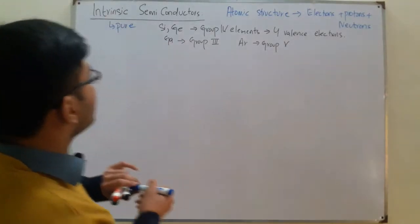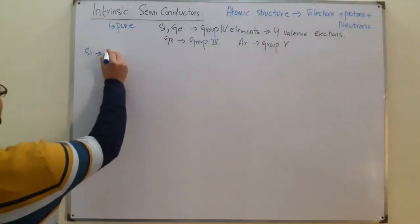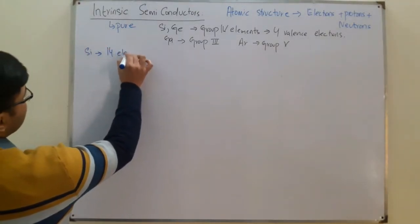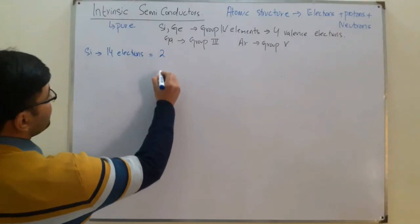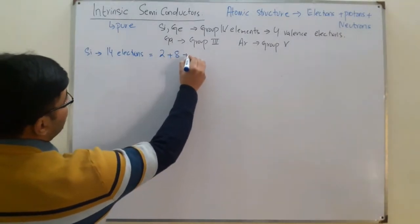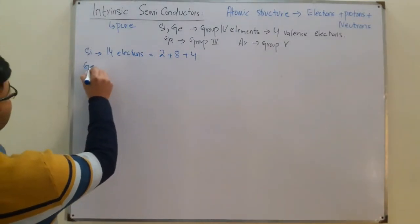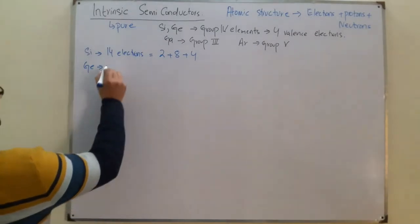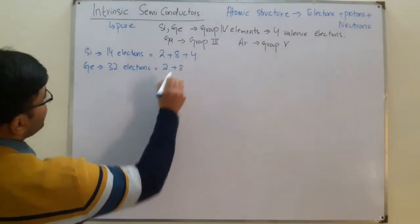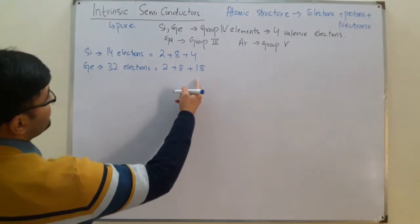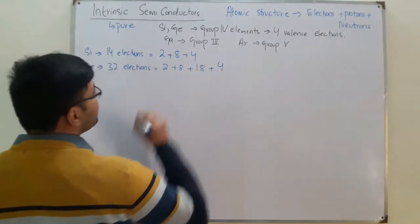Silicon has a total of 14 electrons: 2 in the first shell, 8 in the second shell, and 4 in the last shell. Similarly, germanium has a total of 32 electrons: 2 in the first shell, 8 in the second shell, 18 in the third shell, and 4 in the valence shell.